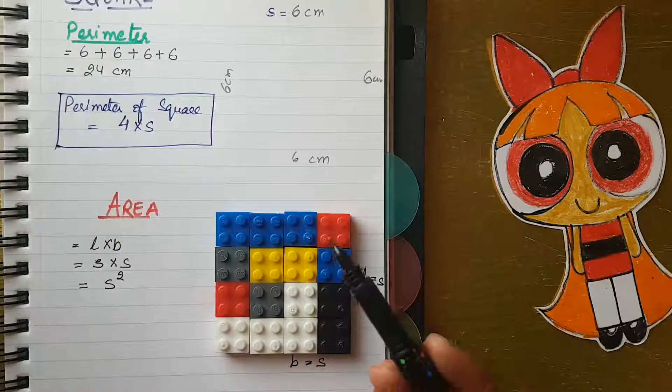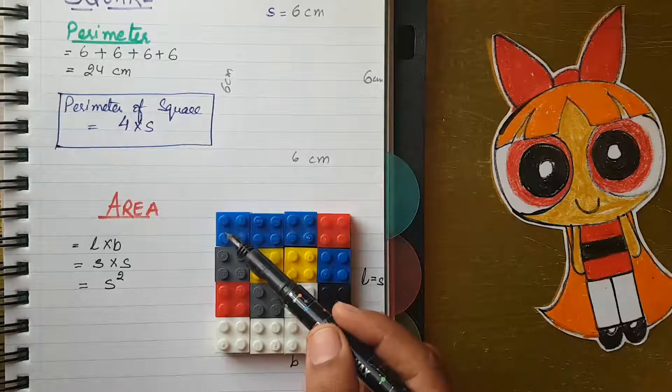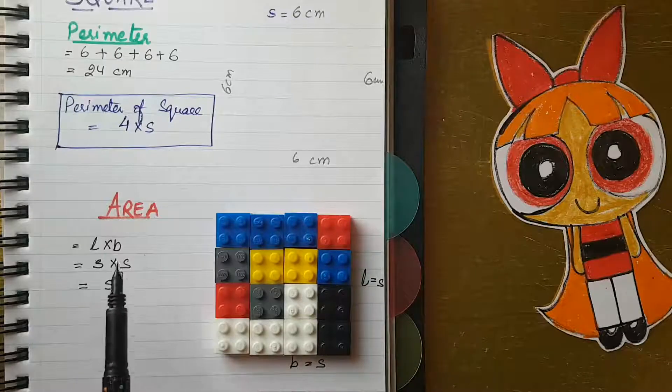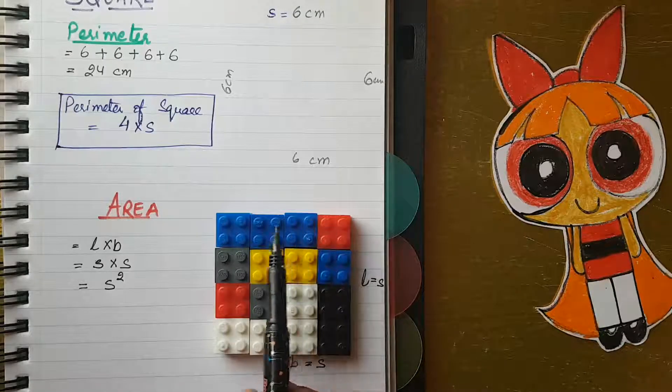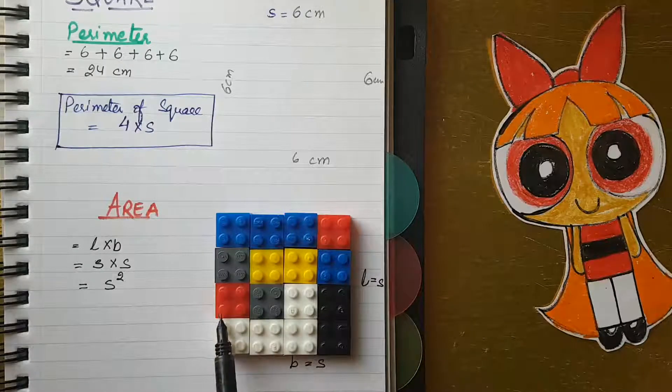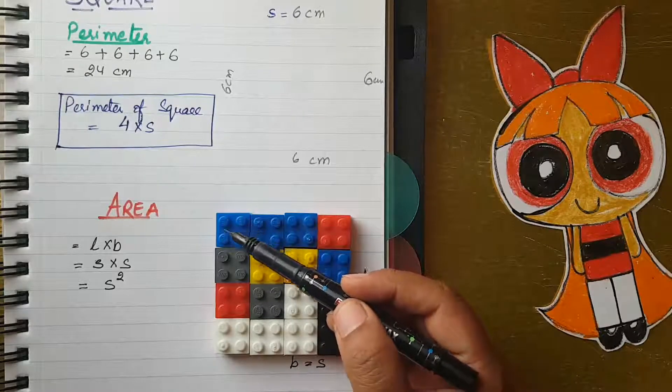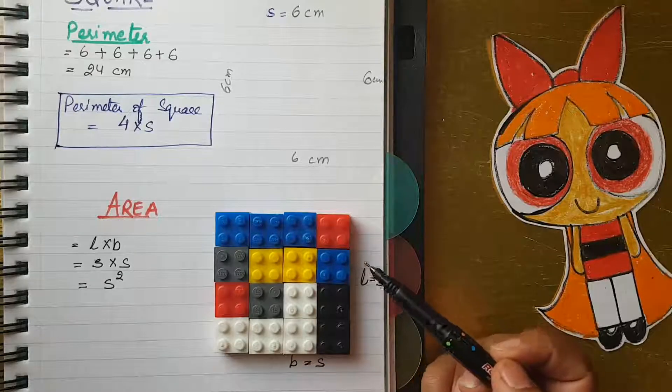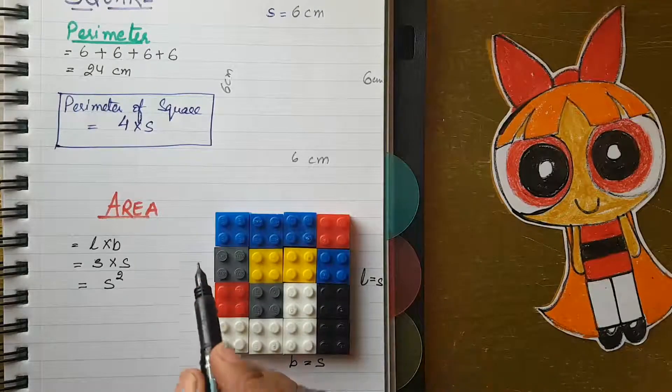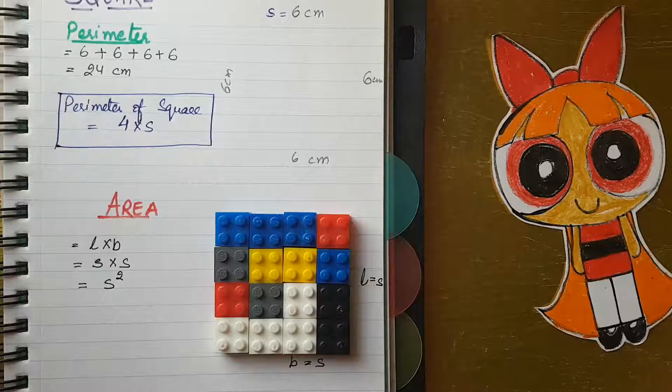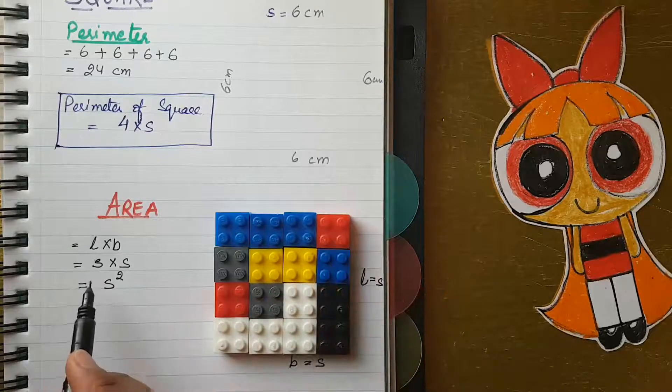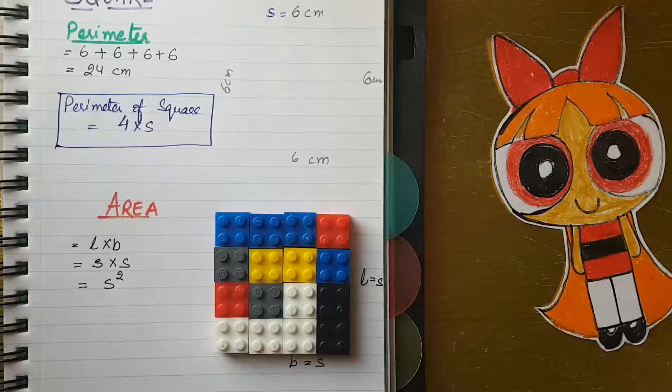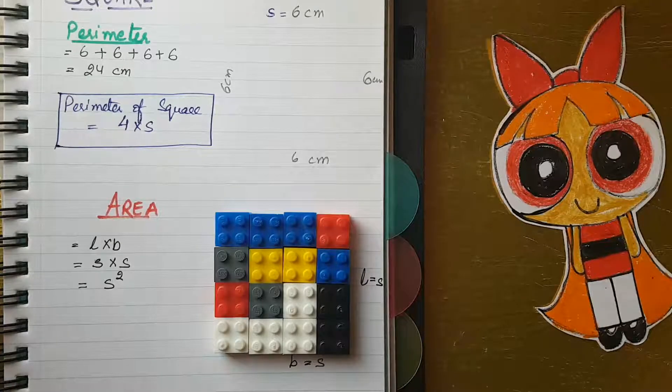If we can count the small circles, let's see: one, two, three, four, five, six, seven, eight. Eight rows are there. And eight columns are there: one, two, three, four, five, six, seven, eight. Eight times eight is 64. The area of the square is 64. So this is the formula of the square area.